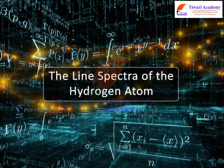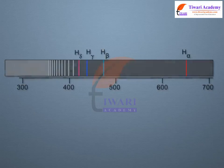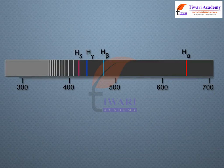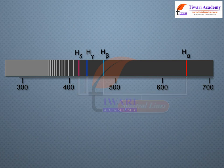The line spectra of the hydrogen atom. The emission spectrum of atomic hydrogen is divided into a number of spectral series. These observed spectral lines are due to the electron making transitions between two energy levels in the atom.